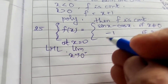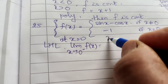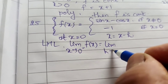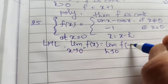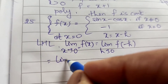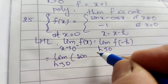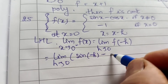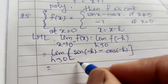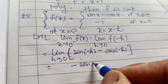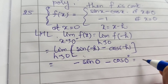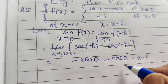For the left hand limit, write x = minus h where h tends to 0. Substituting x = minus h into sin x minus cos x: sin(minus h) minus cos(minus h) = minus sin h minus cos h. Taking the limit as h tends to 0: sin(0) minus cos(0) = 0 minus 1 = minus 1. The left hand limit equals minus 1.